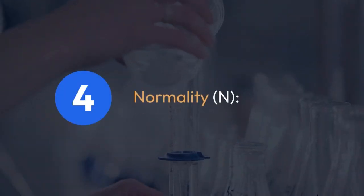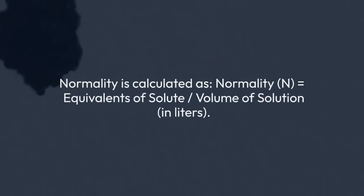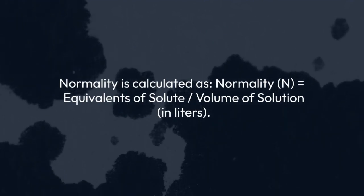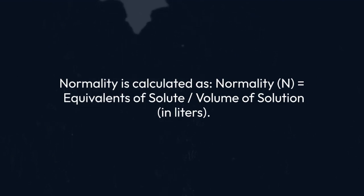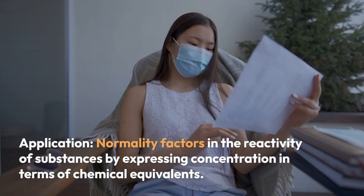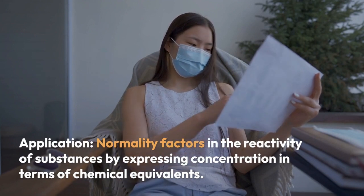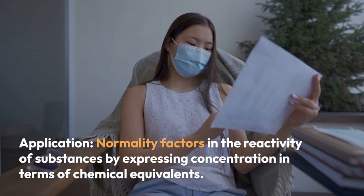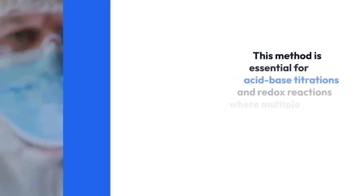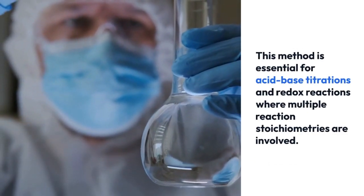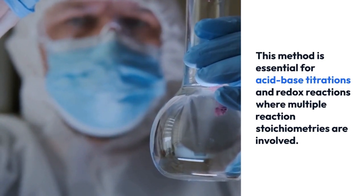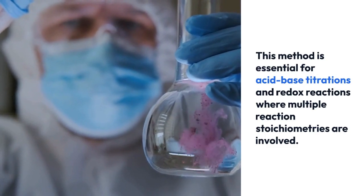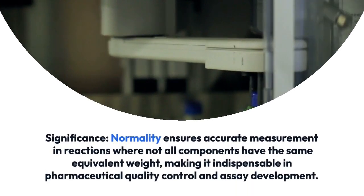For normality (N), it is calculated as: normality (N) equals equivalents of solute divided by volume of solution in liters. Normality factors in the reactivity of substances by expressing concentration in terms of chemical equivalence. This method is essential for acid-base titrations and redox reactions where multiple reaction stoichiometries are involved, ensuring accurate measurement in reactions where not all components have the same equivalence.